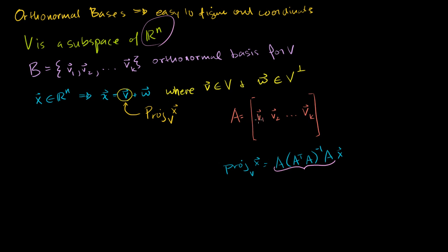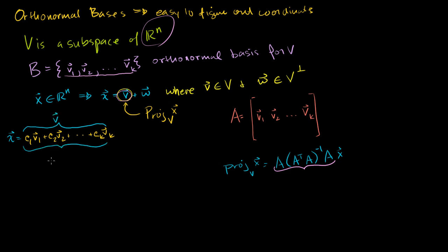Let's see if the assumption that these vectors are orthonormal in any way simplifies this. The first thing we can do is explore a little bit. This vector v is a member of our subspace, which means it can be represented as a linear combination of my basis vectors. So I can write x equal to C1 times V1 plus C2 times V2, all the way to plus Ck times Vk. This is the same as just some unique member of my subspace V — that's the projection of x onto the subspace V.